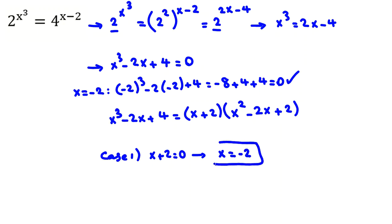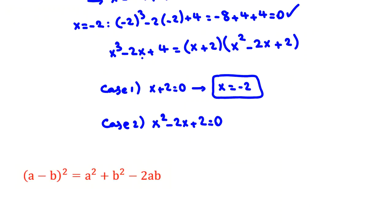And you can check it works. In case 2, x² minus 2x plus 2 equals 0. Solving this, it's impossible to be 0. You can use the quadratic formula or you can use this identity. By this, if I place here (x-1)², a is x, b is 1. It will be x² plus 1 minus 2 times x times 1, minus 2x.